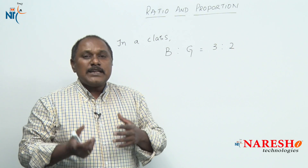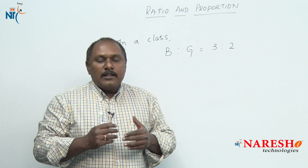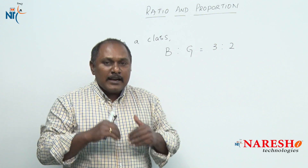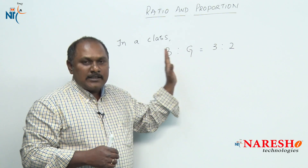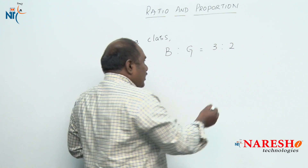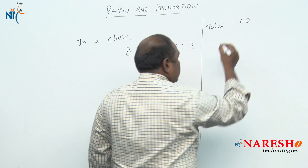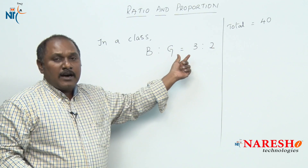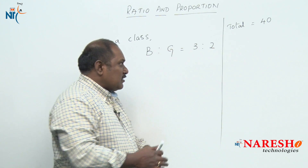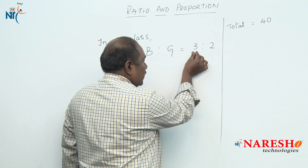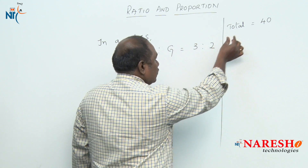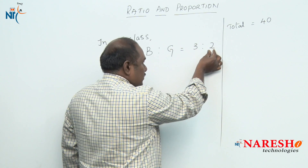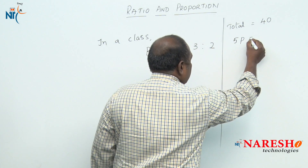If you want to know the actual number of boys and girls in the class, there should be some other information given to us. Suppose the total strength of the class is 40 — boys and girls are in the ratio of 3 is to 2. If boys are 3 parts and girls are 2 parts, the total is 3 plus 2, that is 5 parts, which should be equal to 40.